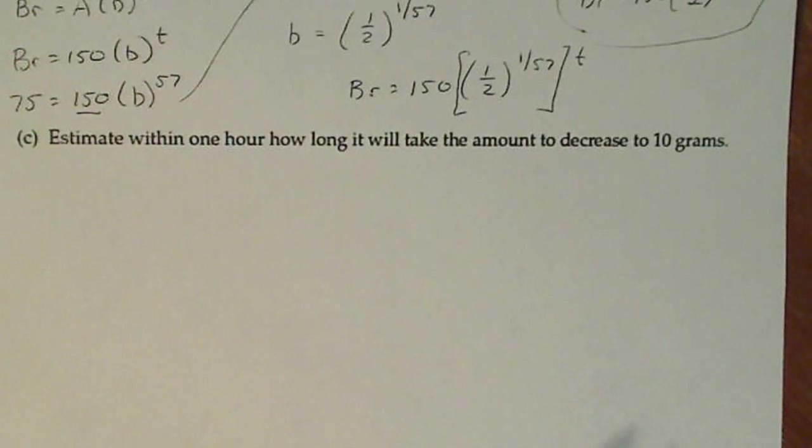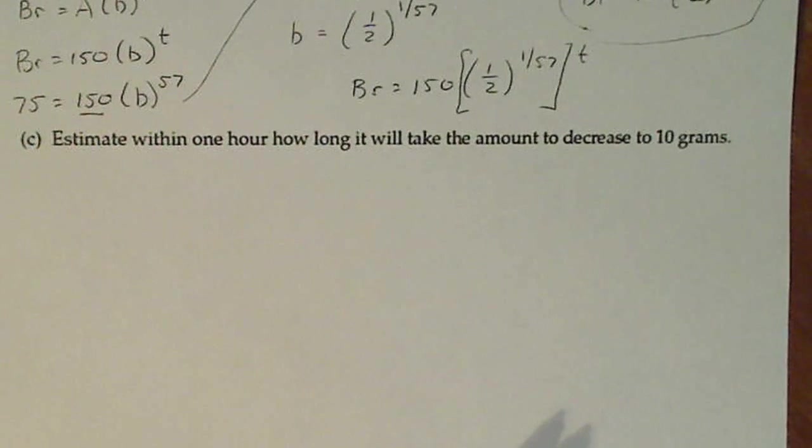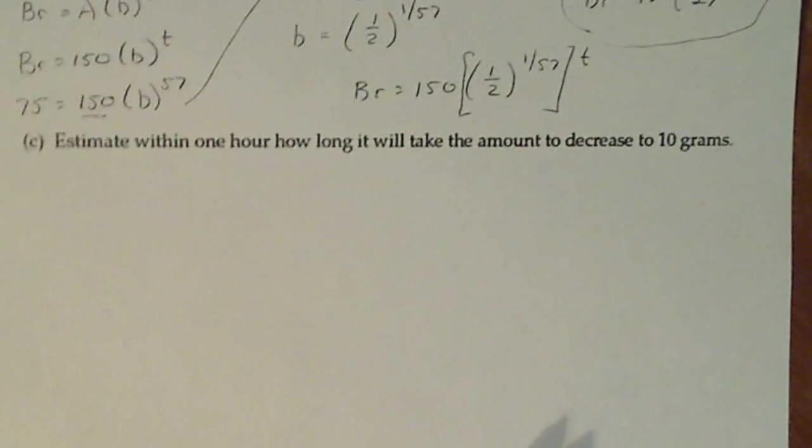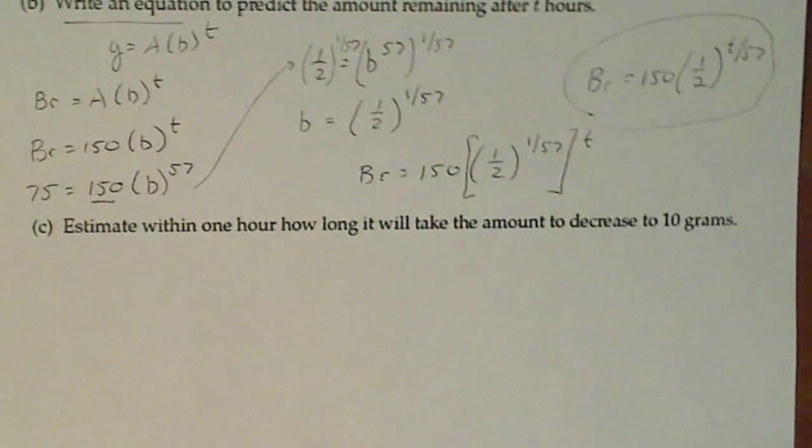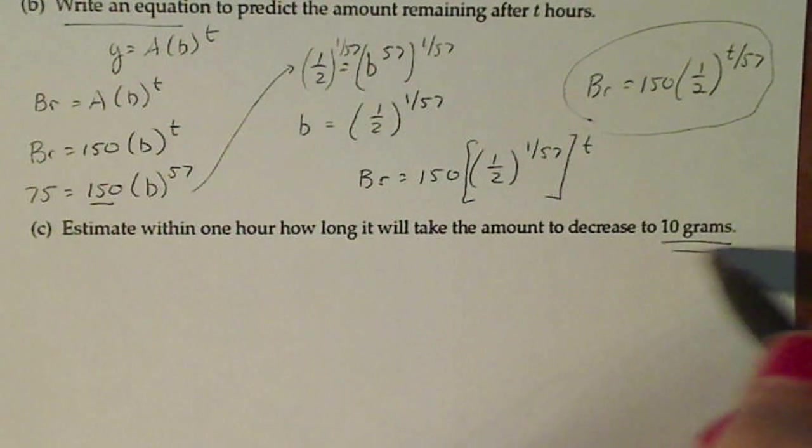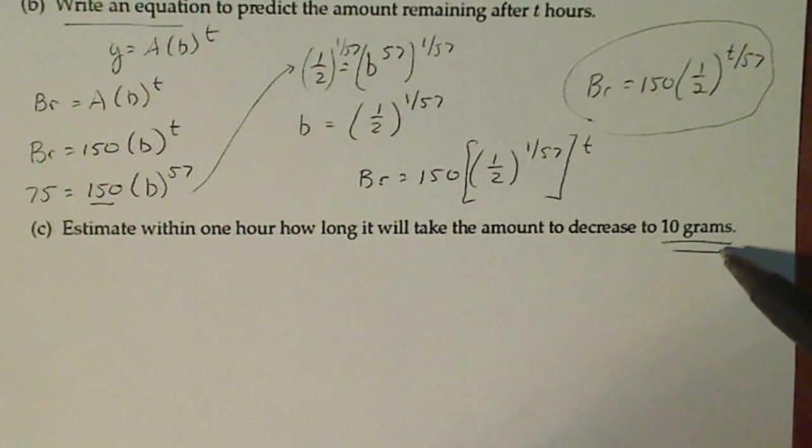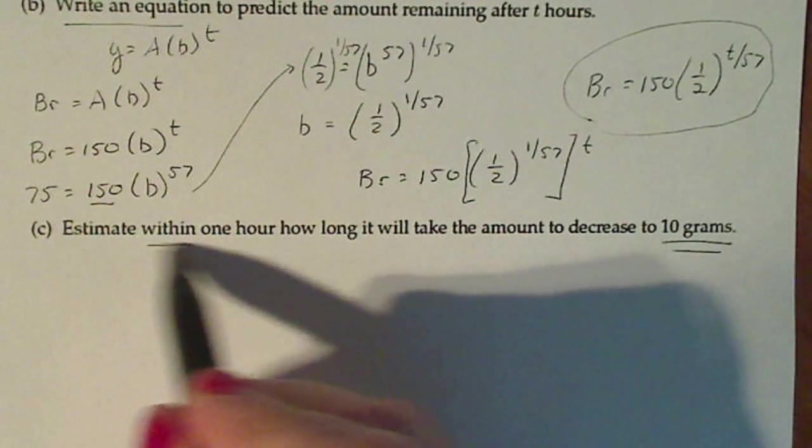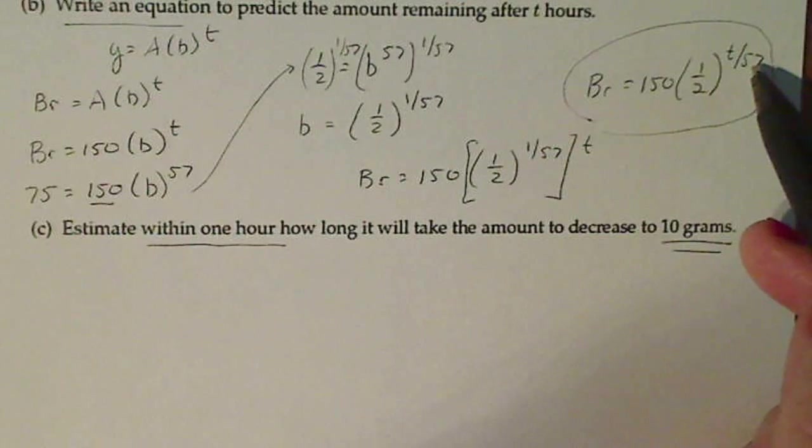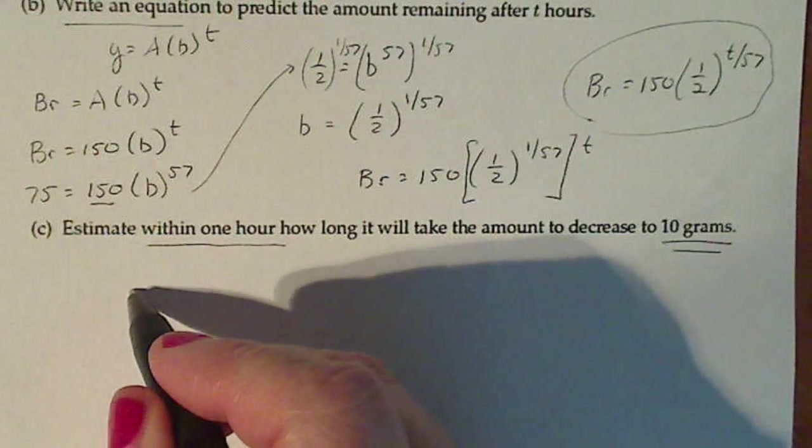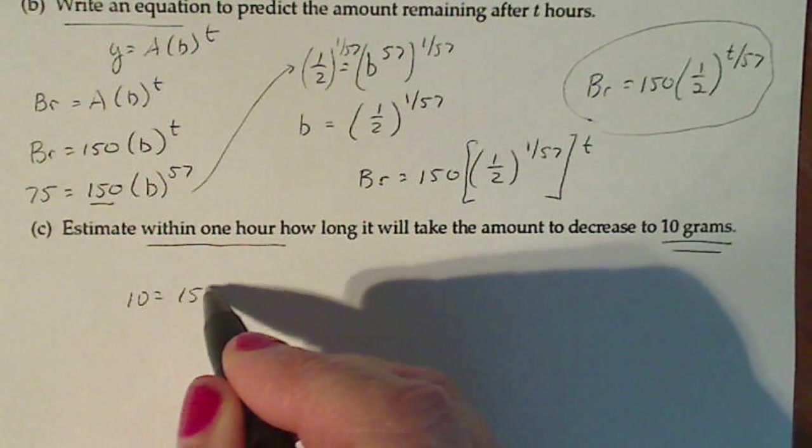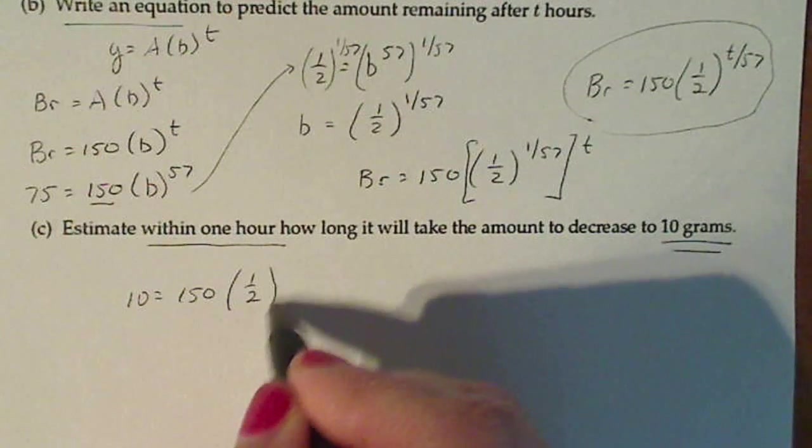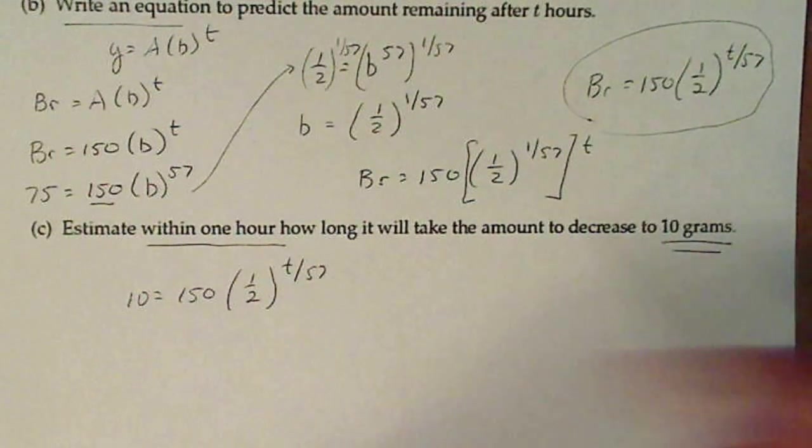Now it says estimate within one hour how long it will take for the amount to decrease to 10 grams. So 10 grams is the amount of Br-77 we have. So that'll be 10 and I need to find t. So 10 is equal to 150 times one-half to the t over 57, and I just solve for t.